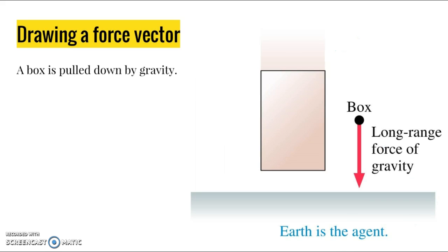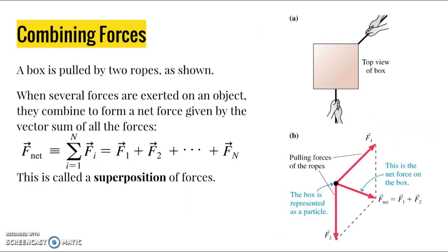We can also draw force vectors for long-range forces. In this case, we have a box in freefall. The agent in this situation is actually Earth, because Earth is providing this gravitational force. The box is the object, and it's being pulled down towards Earth by the long-range force of gravity. So we draw a force vector pointing straight down, like the force due to gravity.